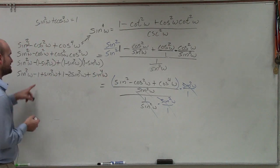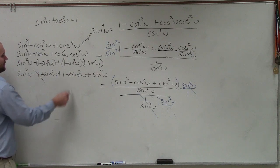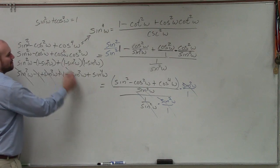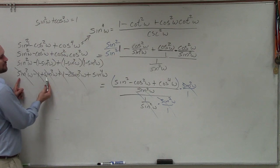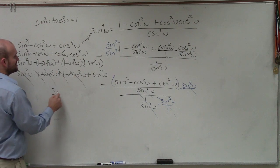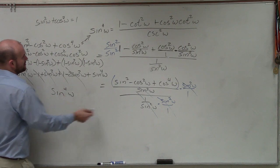So now we look at this, and you can say that my negative 1 and my positive 1, those add to 0. Sine squared plus sine squared is 2 sine squared minus 2 sine squared. So I have sine squared plus sine squared is 2 sine squared. Subtract 2 sine squared. That just leaves me with a sine to the fourth w.